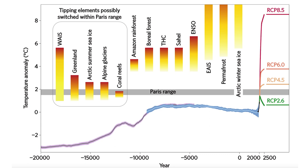A number of studies have shown that we might have already crossed this particular tipping point. The uncertainty bar starts below one degree warming, because we are now at about one degree above the pre-industrial level and may have just passed this tipping point already. That means the further decay of the West Antarctic ice sheet is now basically programmed in — it happens irreversibly and will raise global sea levels by about three meters in the coming centuries to millennia.